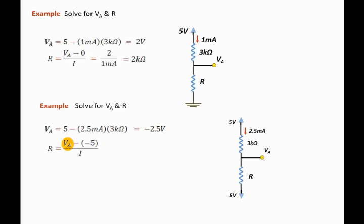Now we can state that R is equal to negative 2.5 minus the negative 5 over 2.5 milliamps, and that is equal to 1 kilo ohm.